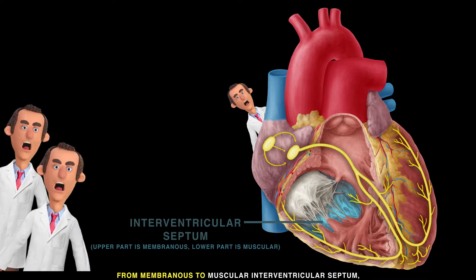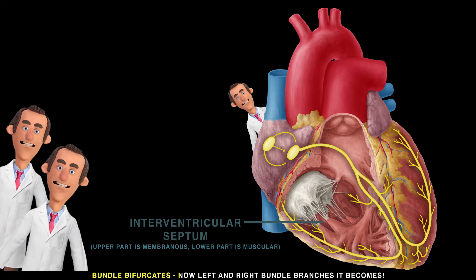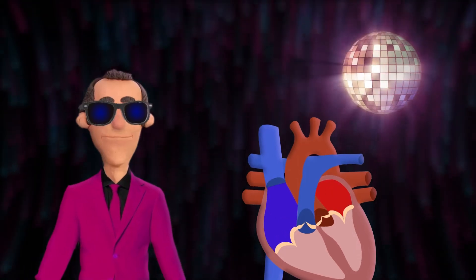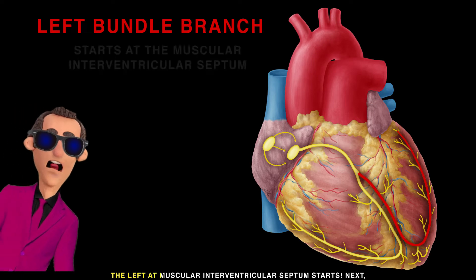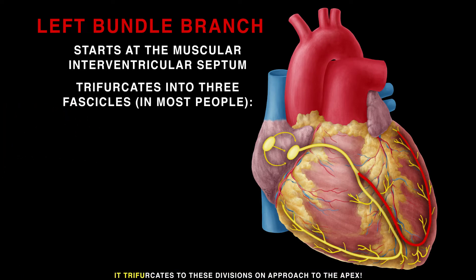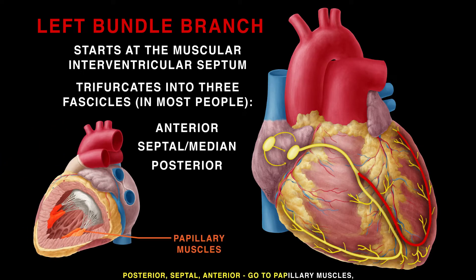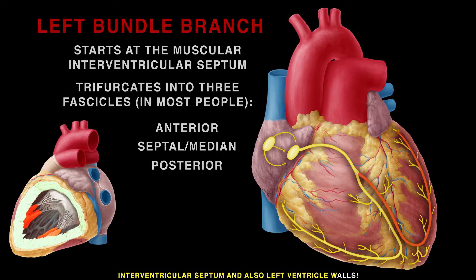From the membranous to the muscular interventricular septum, the bundle bifurcates — now becoming the left and right bundle branches. The left bundle, at the muscular interventricular septum, trifurcates into divisions as it approaches the apex: posterior, septal, and anterior divisions going to the papillary muscles.